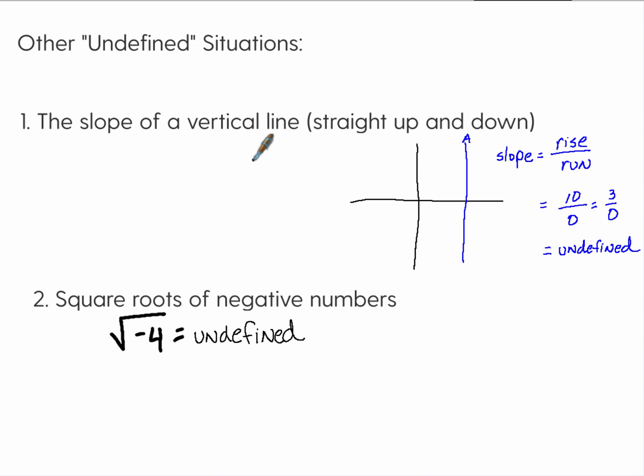So there are some other undefined situations that you might see on the GED. One is realizing that the slope of a perfectly vertical straight up and down line is undefined. So here's my coordinate crosshairs here, my x and y, and here's the line straight up and down. The slope would be the rise over the run. You could pick any points on here and you know, let's call it 10, let's call it 3, it doesn't really matter, but there is no run. There's no run. And so the slope of a straight up and down perfectly vertical line is undefined. Because the denominator is 0.